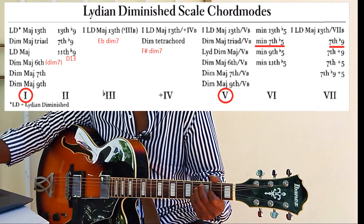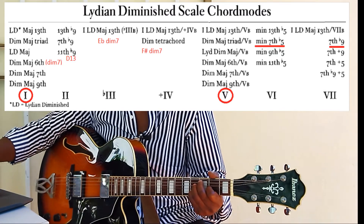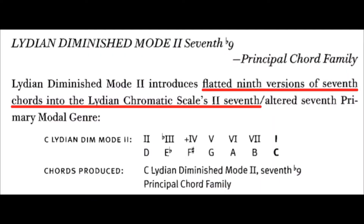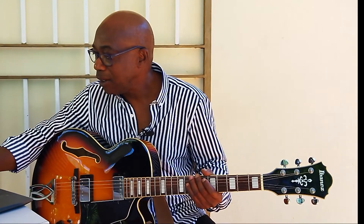Let's move on to mode two. I quote again from the book: "Lydian diminished mode two introduces flattened ninth versions of seventh chords into the Lydian chromatic scale's second altered seventh primary modal genera." Okay, it sounds scary too, but it means that if you take this Lydian mode two and start forming chords from the scale — skip a note, skip a note — it will give you the flattened ninth versions.